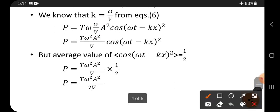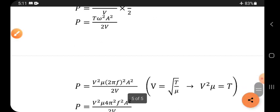The average value of cos² term, we know, is half. So half can be written as 1/2 here. This 2 comes to the denominator.